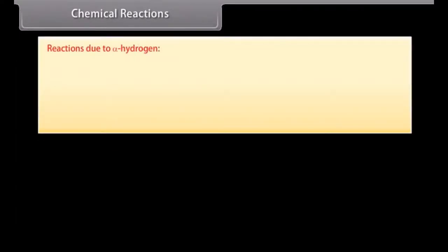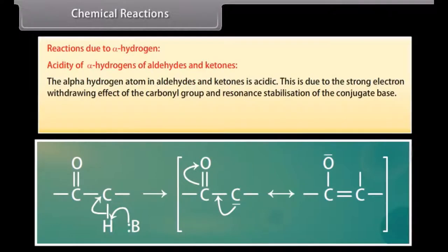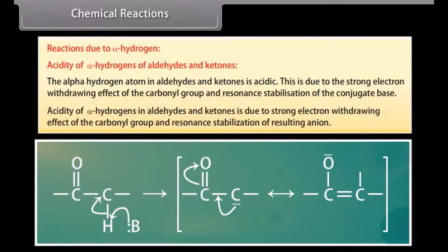Reactions due to alpha-hydrogen: Acidity of alpha-hydrogens of aldehydes and ketones. The alpha-hydrogen atom in aldehydes and ketones is acidic. This is due to the strong electron withdrawing effect of the carbonyl group and resonance stabilization of the conjugate base. The acidity of alpha-hydrogens in aldehydes and ketones is due to the strong electron withdrawing effect of the carbonyl group and resonance stabilization of the resulting anion.